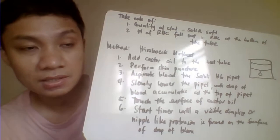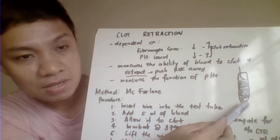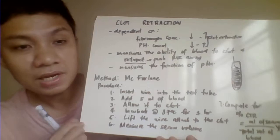We also take note of the number of RBC fallout. RBC fallout is the RBCs that remain when you remove the spring. This correlates: if the clot is solid, there's not much RBC fallout, meaning good quality clot retraction.